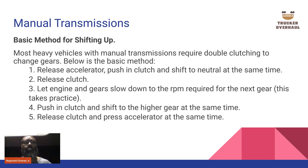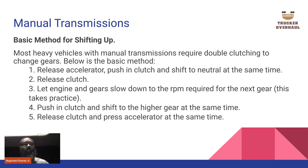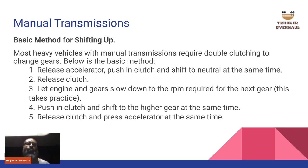Basic method for shifting up — double clutching: Release the accelerator, push in the clutch, and shift to neutral at the same time. Release the clutch. Let the engine and gear slow down to the RPM required for the next gear — this takes practice. Then push the clutch in and shift to the higher gear at the same time. Release the clutch and press the accelerator at the same time. That's how double clutching works.